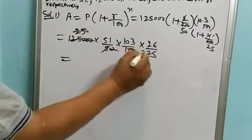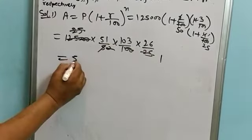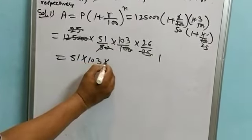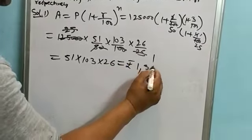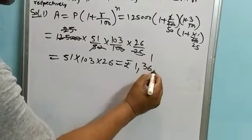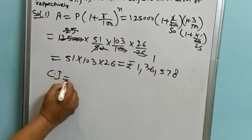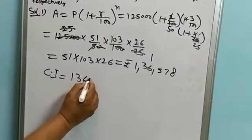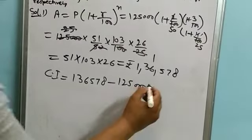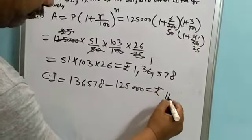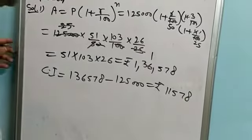Continuing calculation: 5, 2's are 10, 5, 5's are 5. After canceling, we have 51 into 103 into 26, that is Rs. 136,578. Compound interest is equal to 136,578 minus 125,000, that is Rs. 11,578. This is the compound interest. Let's now solve the second question.